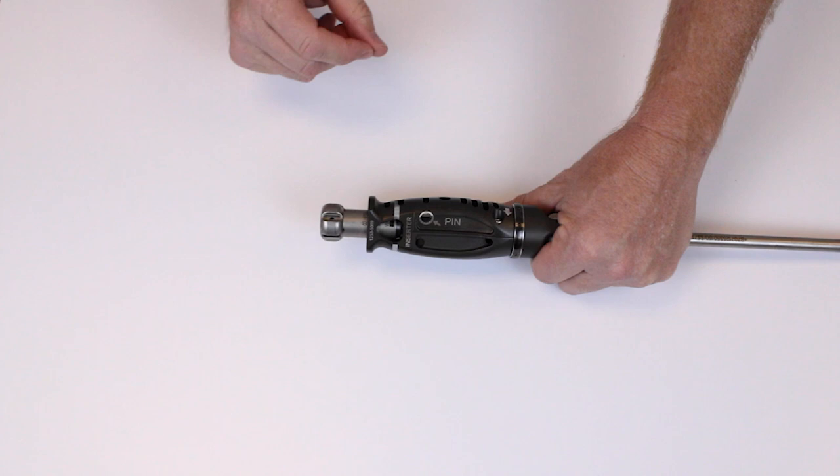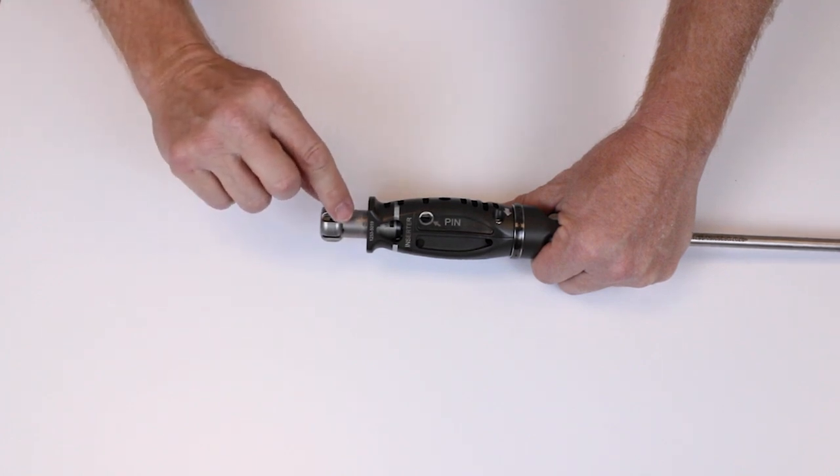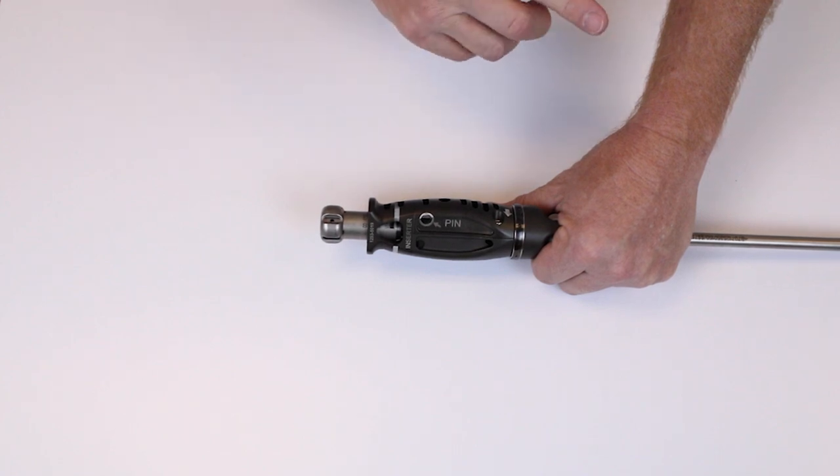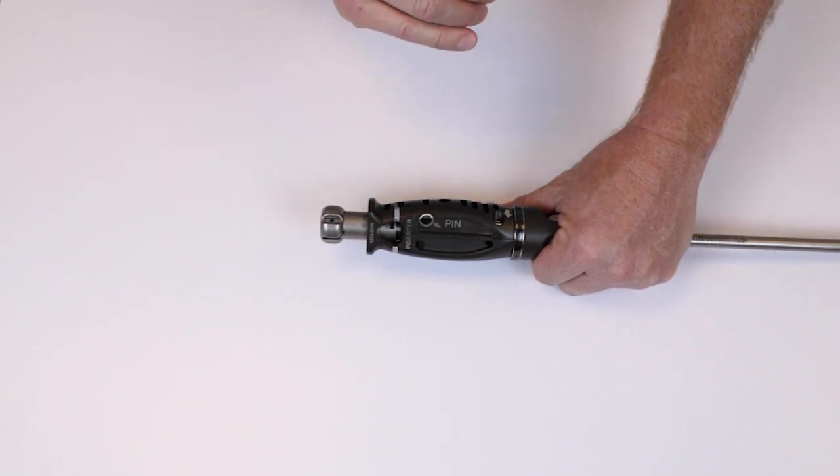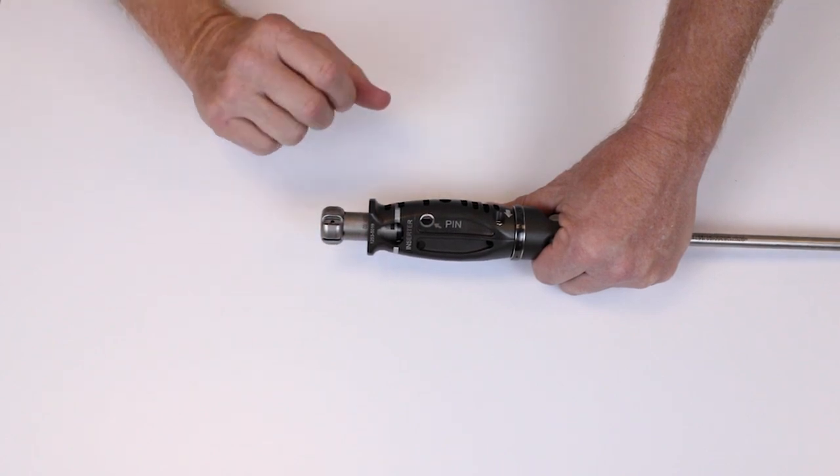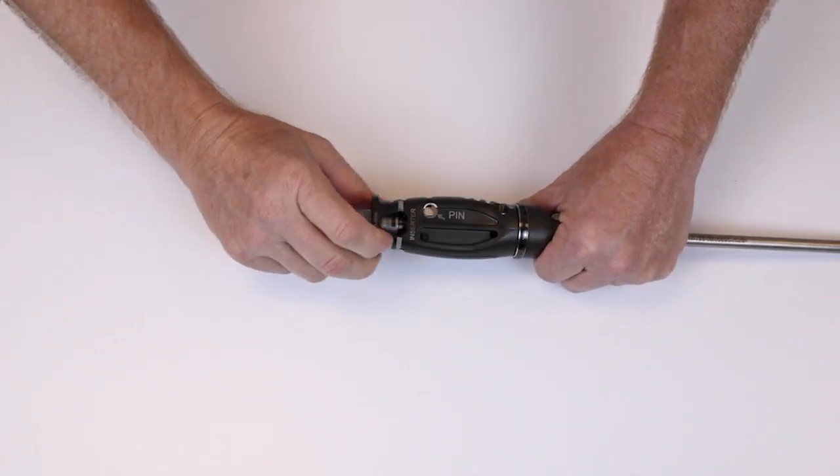It's important to show the surgeon that the draw bar is laser marked with the status of the implant in the disk space. For example, the laser marks here say collapsed. Once I start expanding the implant...